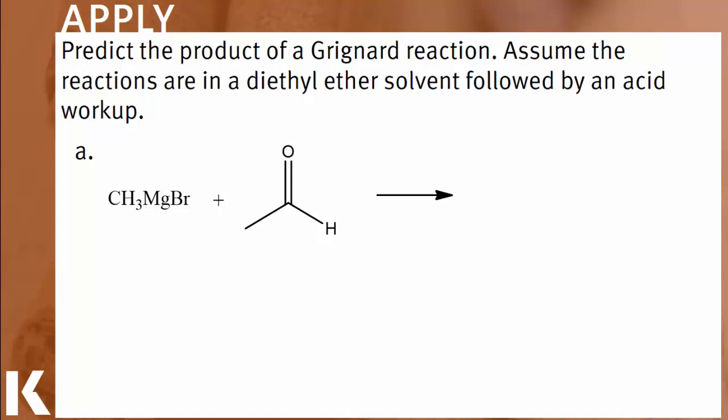Notice that the solvent used is diethyl ether, a polar aprotic solvent. It's very important that we use an aprotic solvent, since a protic solvent will react with our Grignard reagent and consequently destroy our nucleophilic carbon. We're also told to assume an acid workup step.